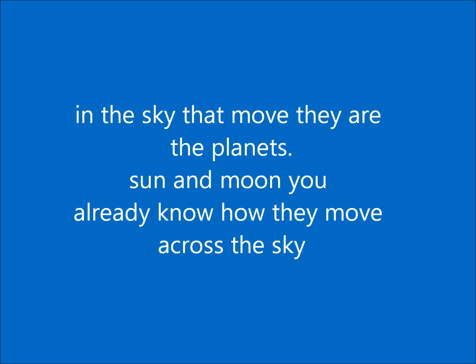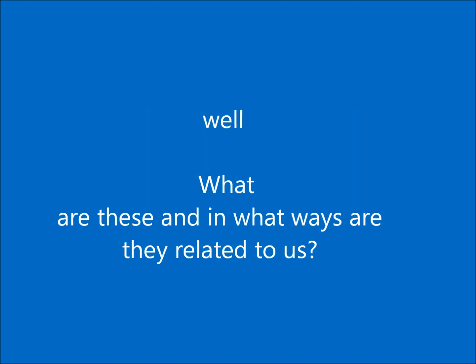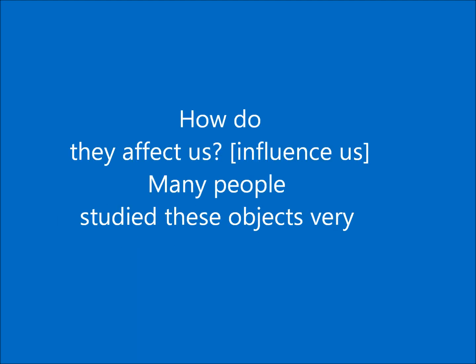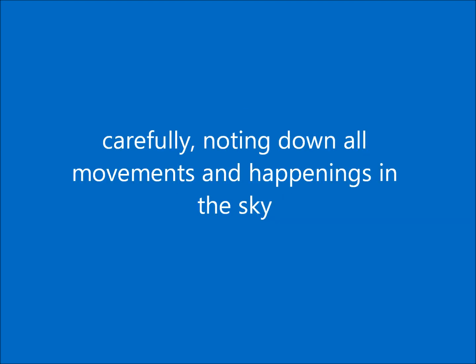There are some star-like objects in the sky that move, and they are the planets, sun, and moon. You already know how they move across the sky. What are these objects, and in what ways are they related to us? How do they affect and influence us? Many people studied these objects very carefully, noting down all movements and happenings in the sky.